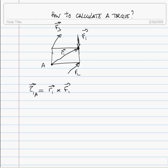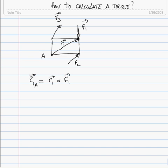To calculate the cross product of R1 and F1 we'll need some angles — let's call this angle alpha. There are actually three different methods to compute this torque, so let's go over all three for F1.